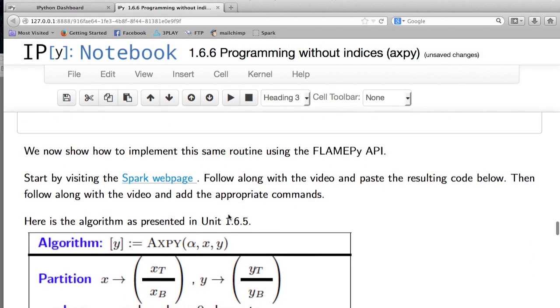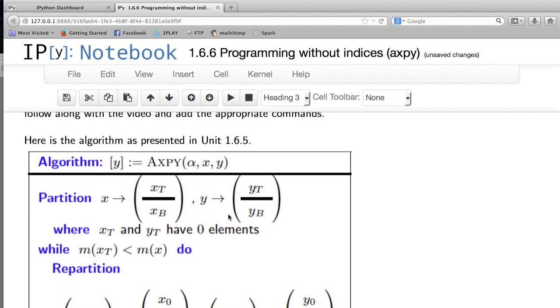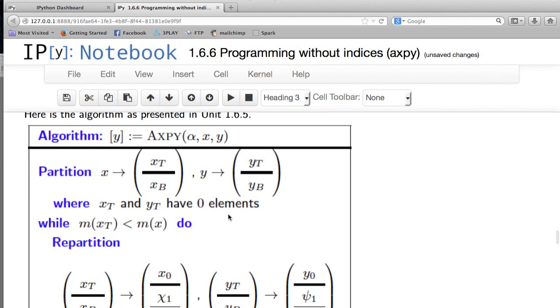Then it starts discussing how to implement the Axby using this Flame API, FlamePy API. I'm going to give you a chance to look at the notebook, look at the algorithm, and then let you try on your own how to translate that using the Spark web page. Once you're done, continue this video and I'll walk you through it.